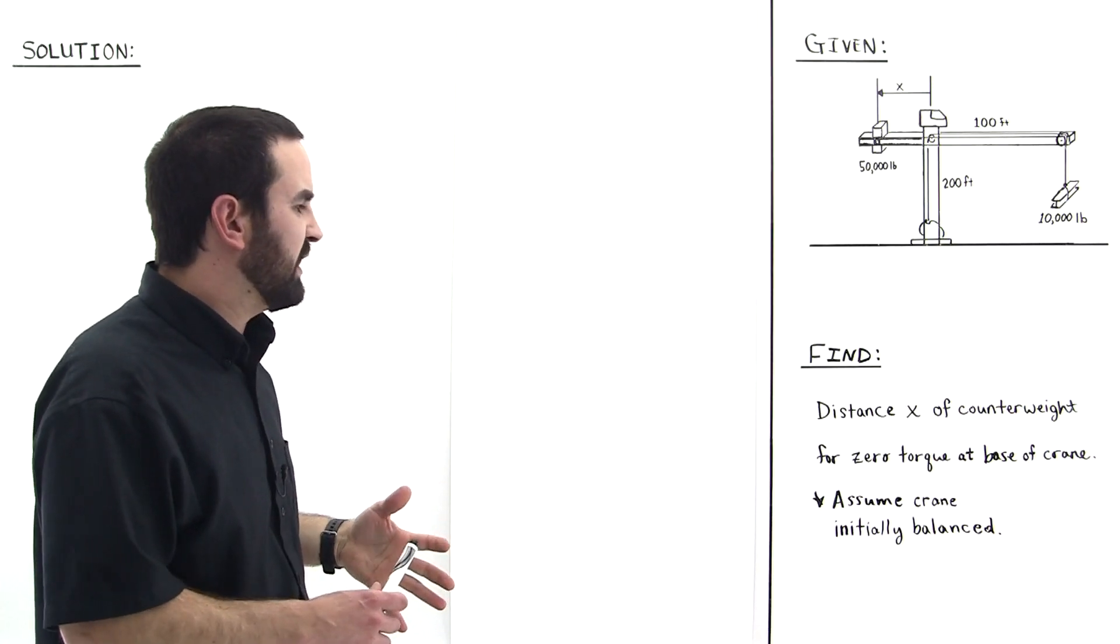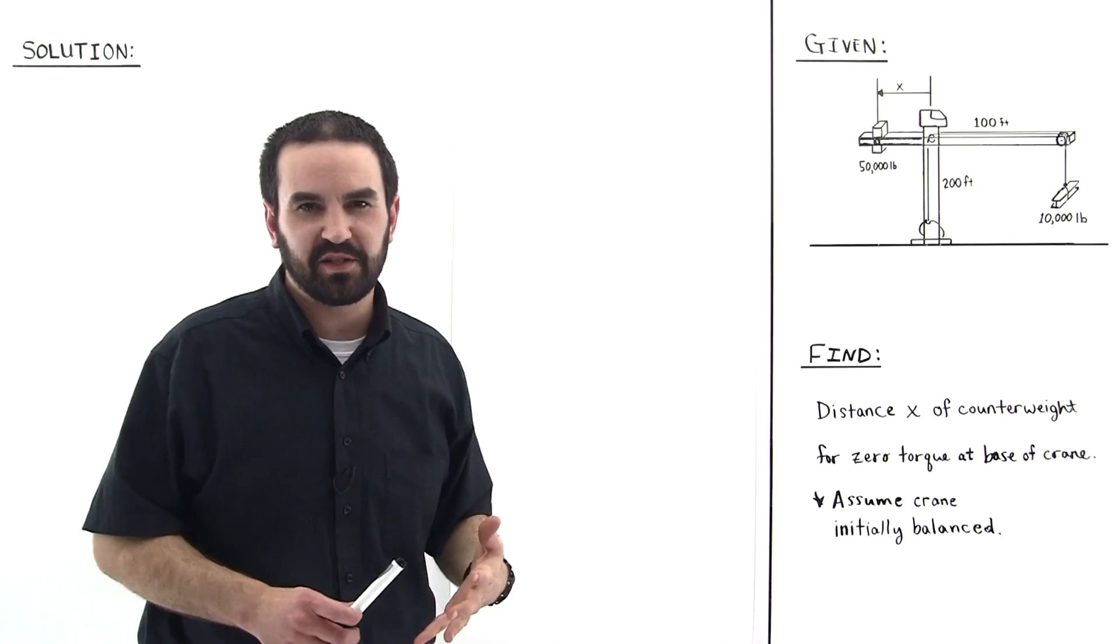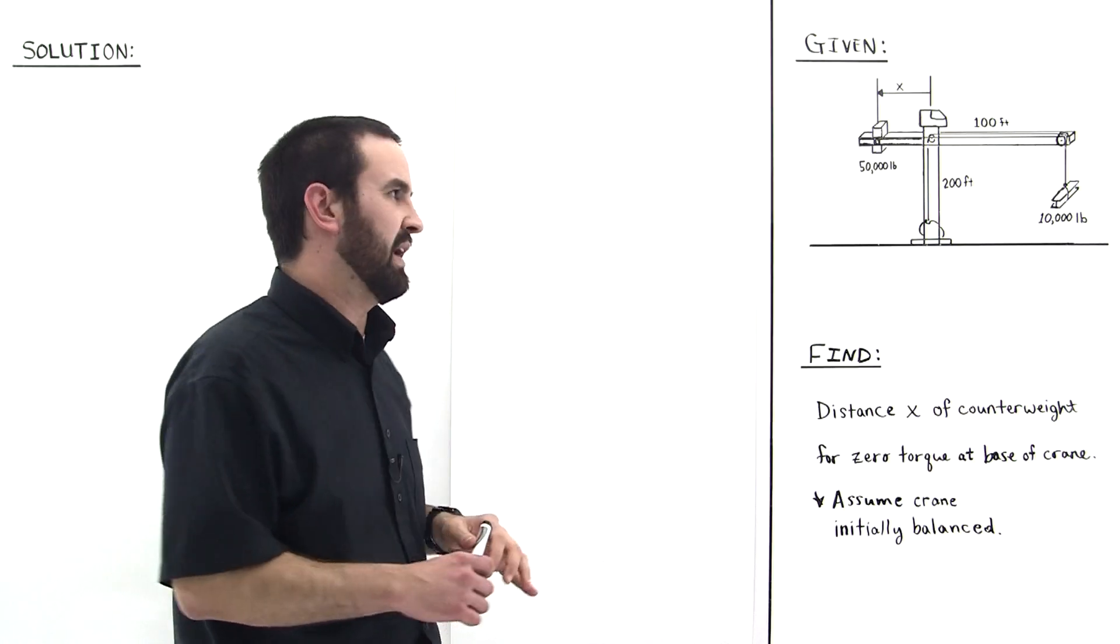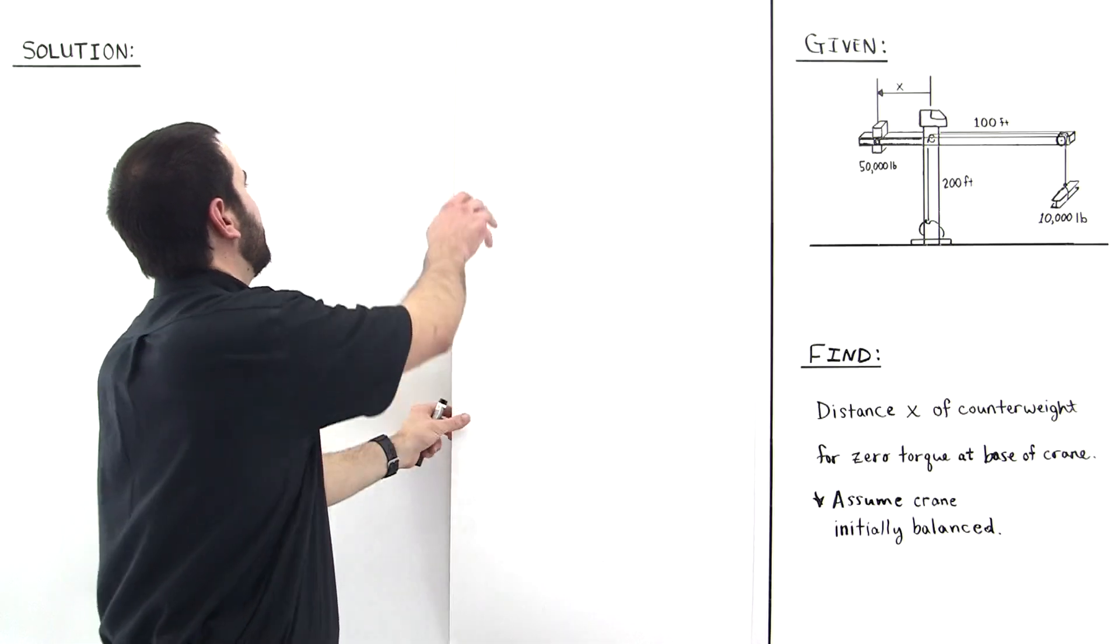So we are going to assume that the crane is initially balanced with no I-beam. Okay, so let's take a look at it.